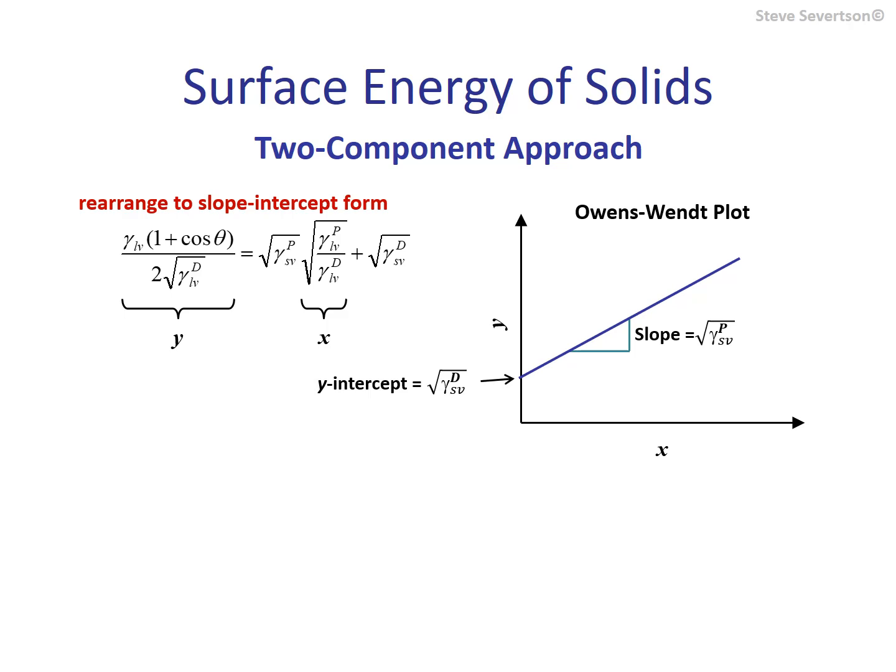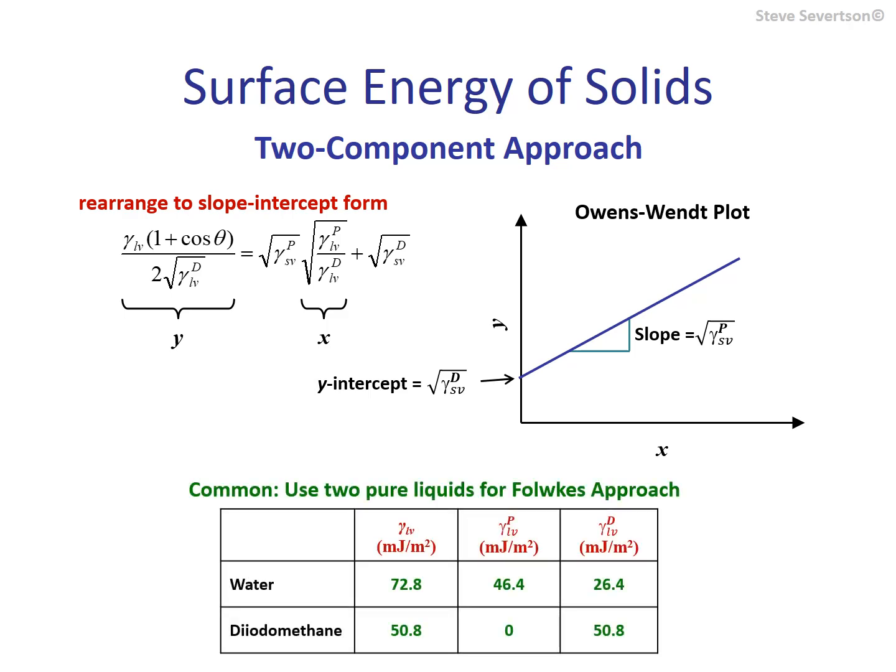As can be seen from the slide, the slope and intercept provide the polar and dispersive components of the surface-free energy of the solid, respectively. The construction of the Owens-Wendt plot is reportedly an effective approach when characterizing low energy surfaces. When examining higher energy surfaces, a more common approach is to use only two pure probe liquids — one possessing only a dispersive component and another possessing significant contributions from both polar and dispersive components. When this is done, it is often referred to as the FOWKES approach.